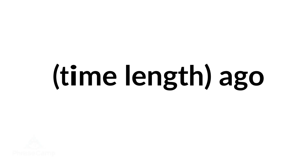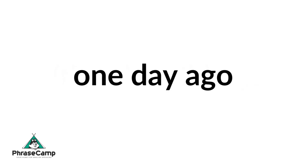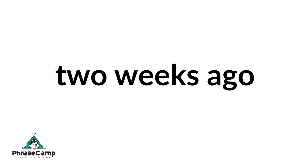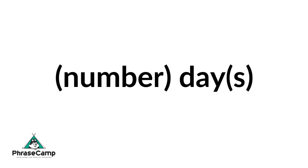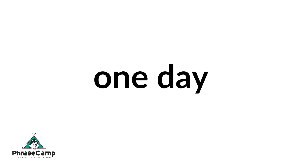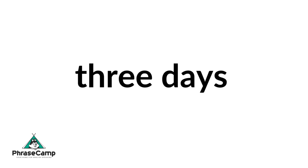Add time length and then ago. For example, one day ago, two weeks ago, or three months ago. You can also add a number and then add day or days — so one day, two days, three days, etc.